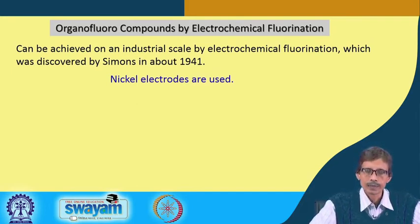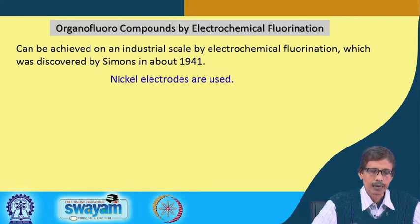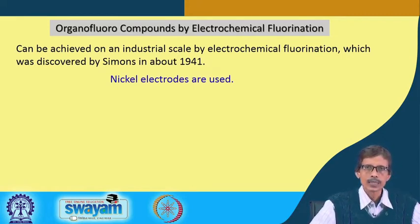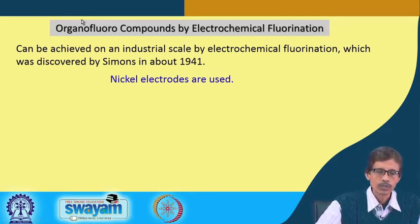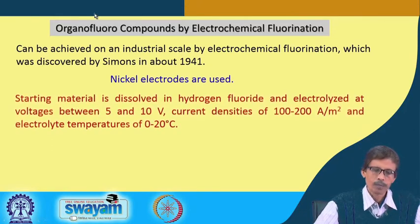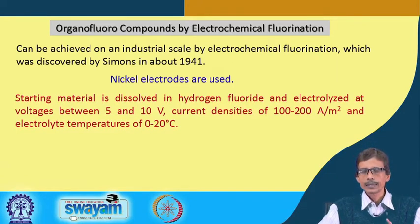We can use cheap nickel as the electrode material, similar to how nickel is used in making nickel crucibles. Very small amounts of nickel are utilized for making these electrodes, but they are very useful for this electrochemical process. The starting material — your substrate — is the organic molecule where you intend to substitute some C-H functions with C-F functions.